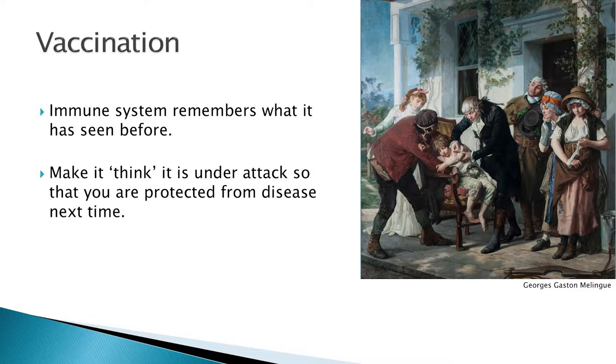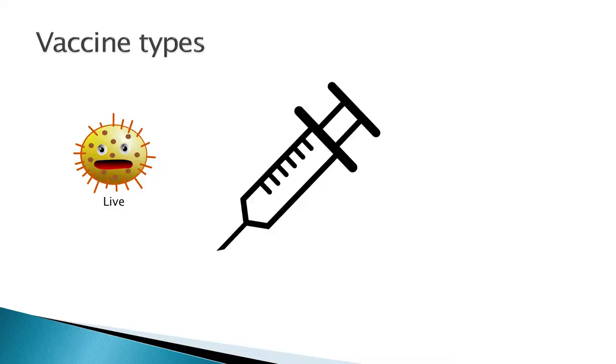Here we've got a painting of the very first vaccination recorded in 1796 — this is Edward Jenner injecting the son of his gardener with some pus taken from a cowpox mark from a milkmaid. There are several different types of vaccines, and what he was doing is using a live vaccine: he was putting a live infectious virus into this child, and luckily for everybody involved, it actually protected him from smallpox.